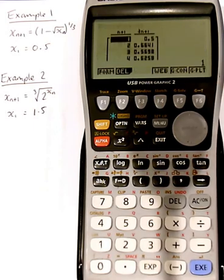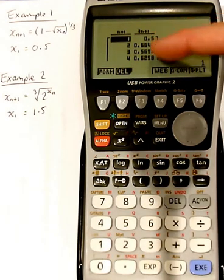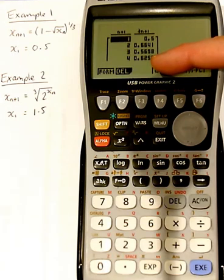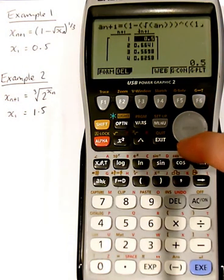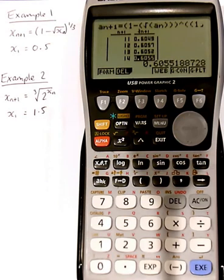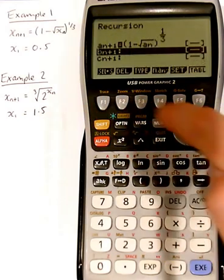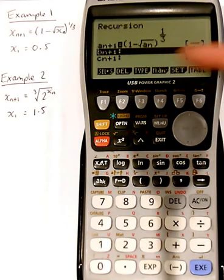If we press table, now we can see the n value, and we can see what our iterate is. And so if you need to give your answer to a number of decimal places, you just scroll down until the values start to agree to that amount of decimal places. From here, from this table, we could go back to the form, which is just how we typed in our formula.